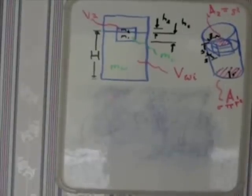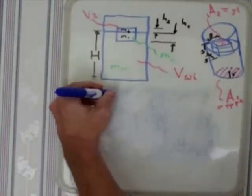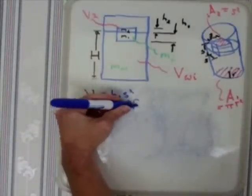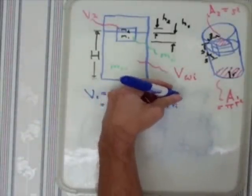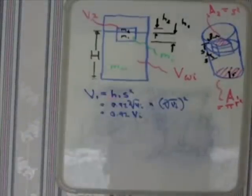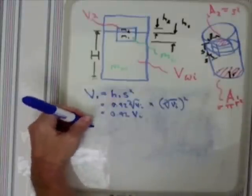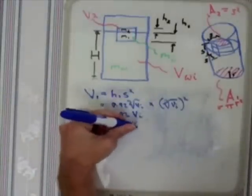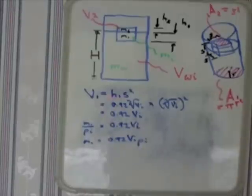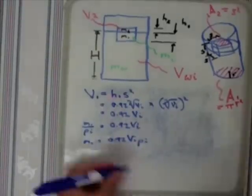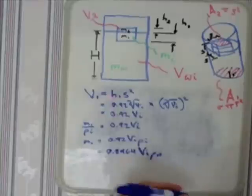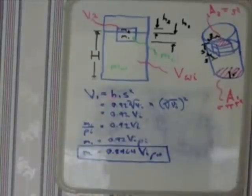So now we can use the H1 and H2 terms to get our M1 and M2. We write V1 equals H1 times S squared. We plug in the H1 and rewrite the S squared terms in terms of volume of ice. We wind up with M1 equals 0.92 VI times rhoi. Rhoi is density of ice. And rewrite that as M1 equals 0.8464 VI rhoi.